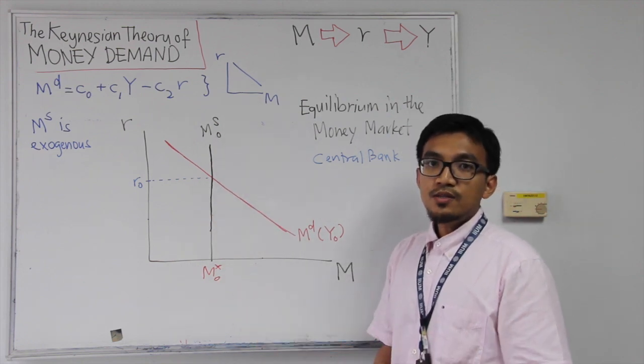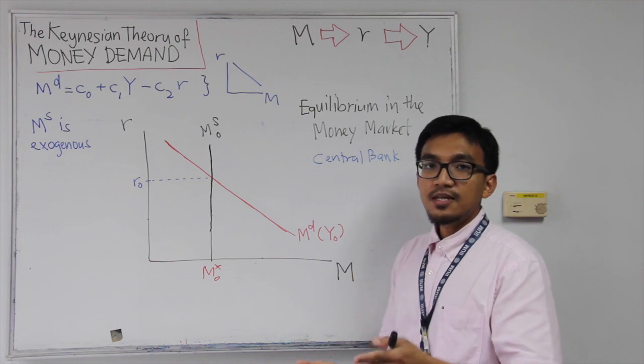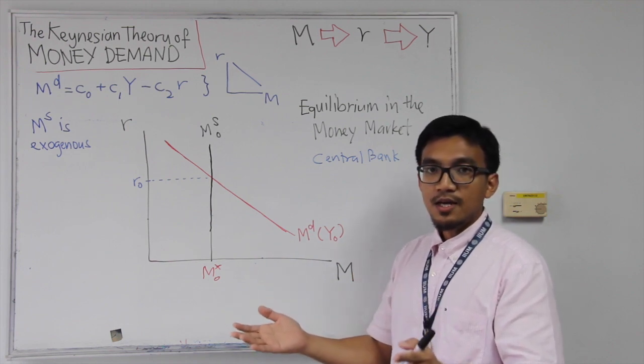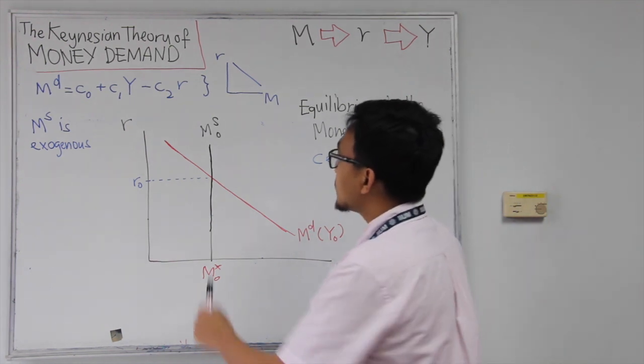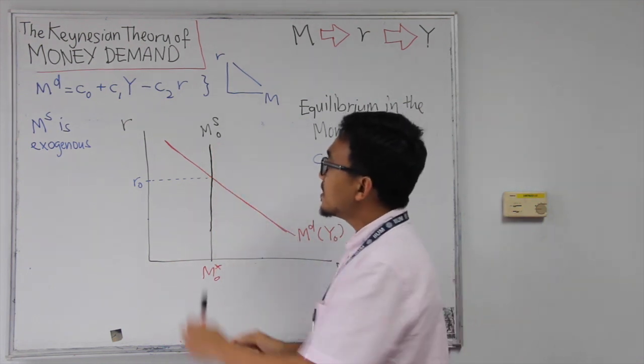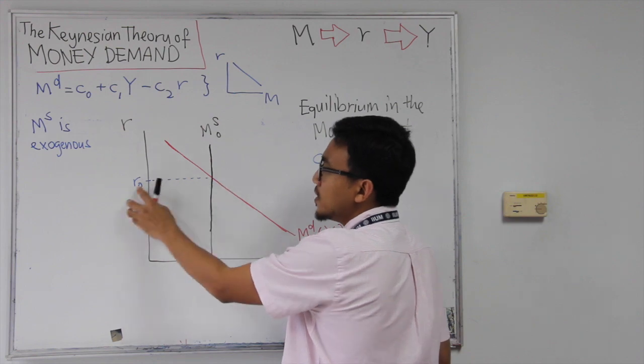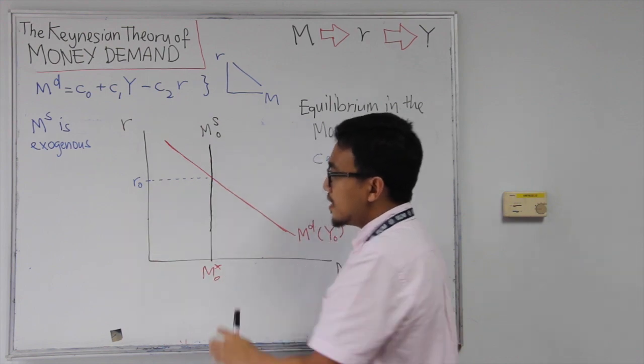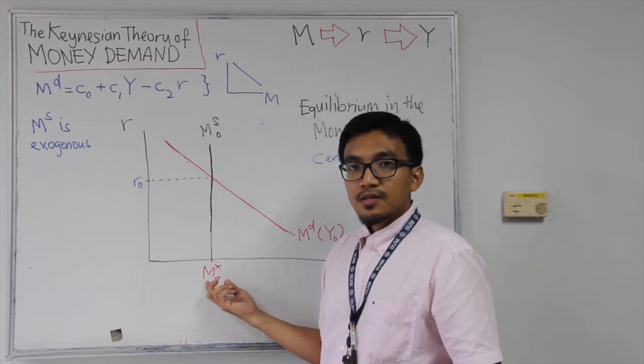So that explains why we have a vertical supply of money. Especially, that will be true in the short run especially. Whatever money that has been printed, we can only have that amount of money. So this, the intersection between the money supply and money demand will then give us the equilibrium interest rate at R0 and equilibrium quantity of money at M star 0.